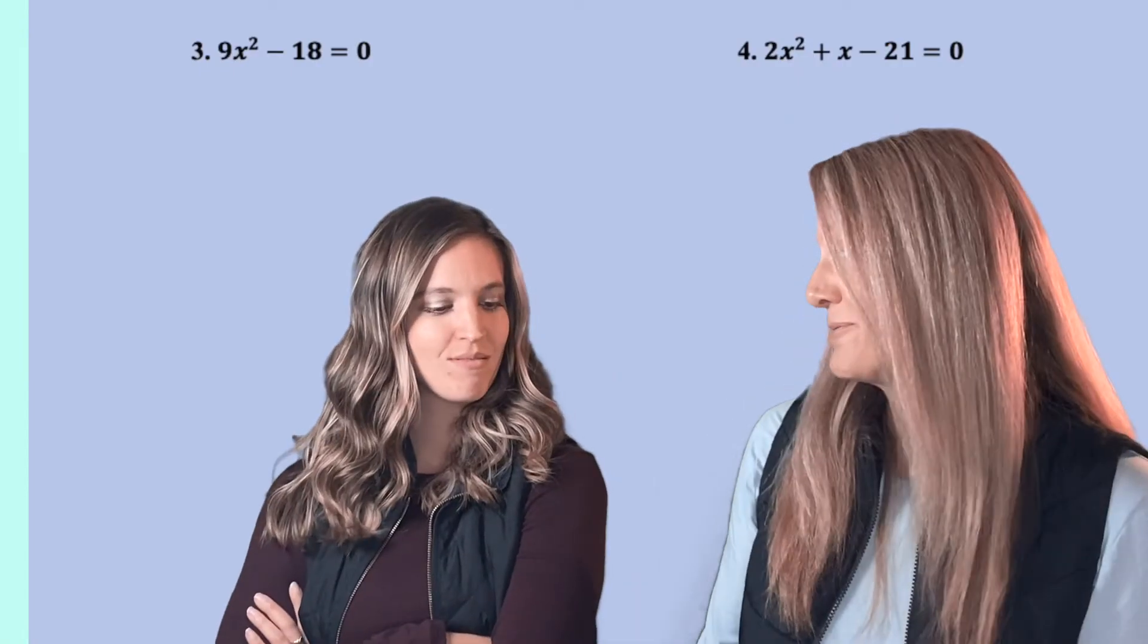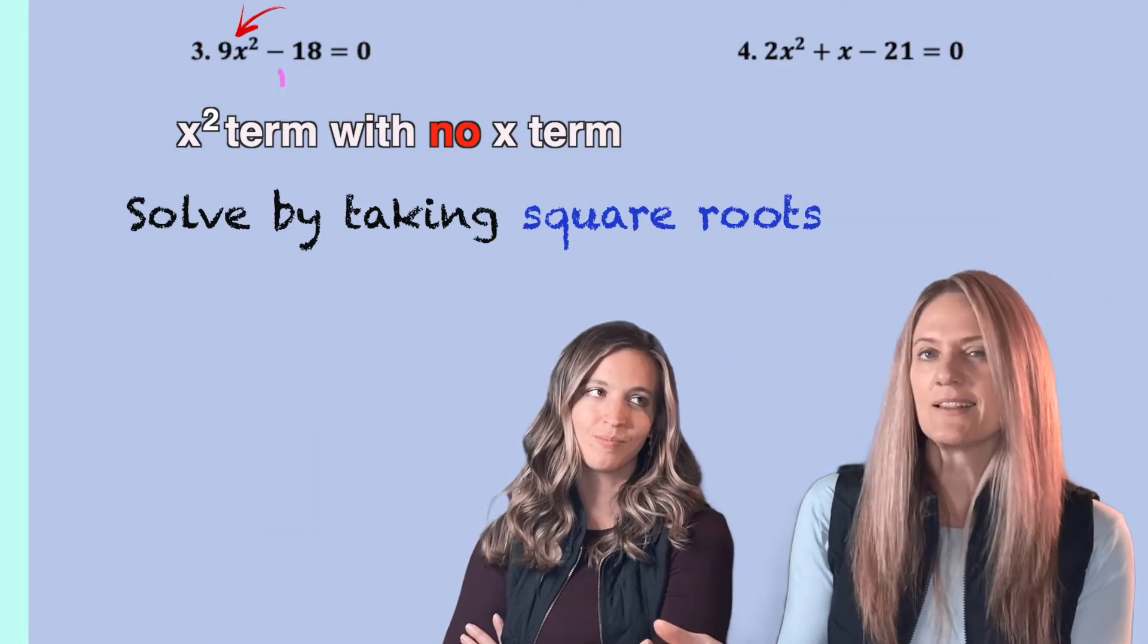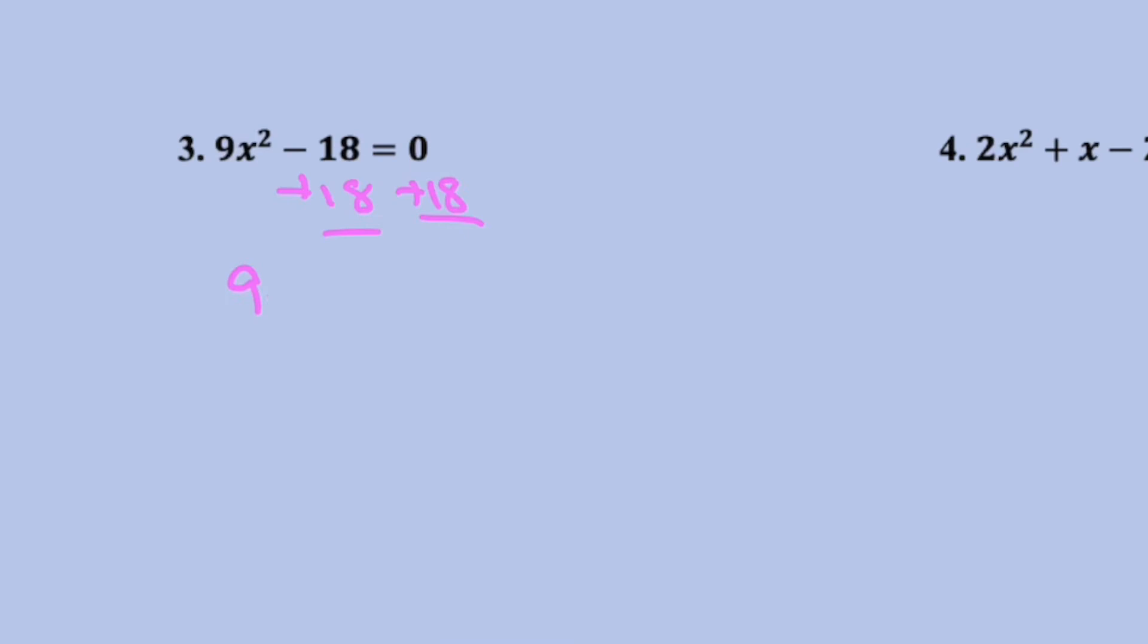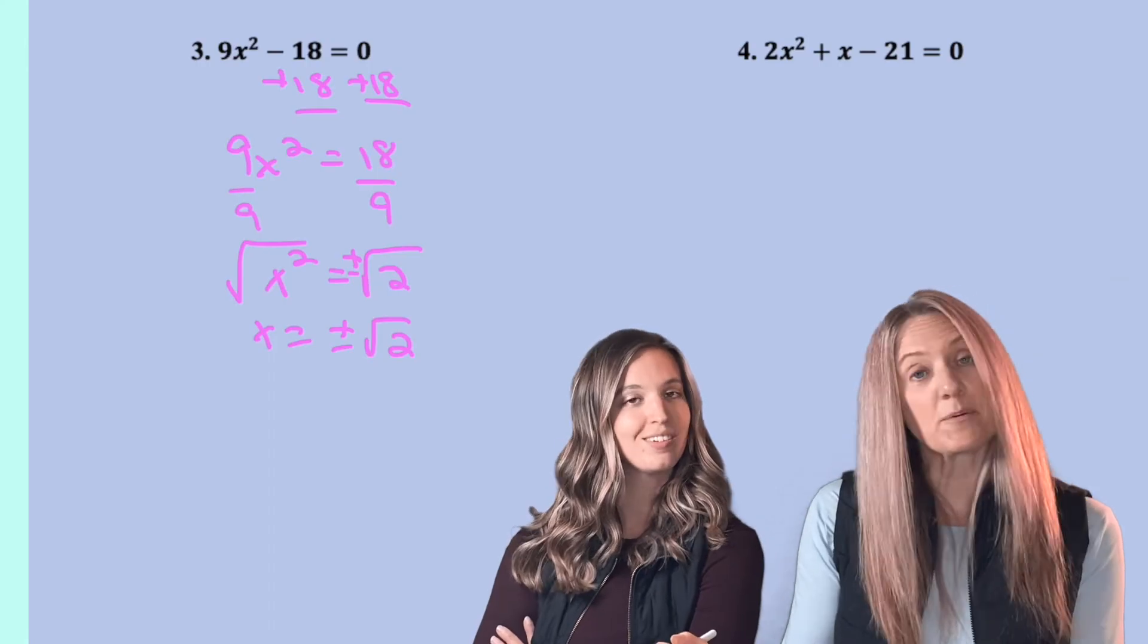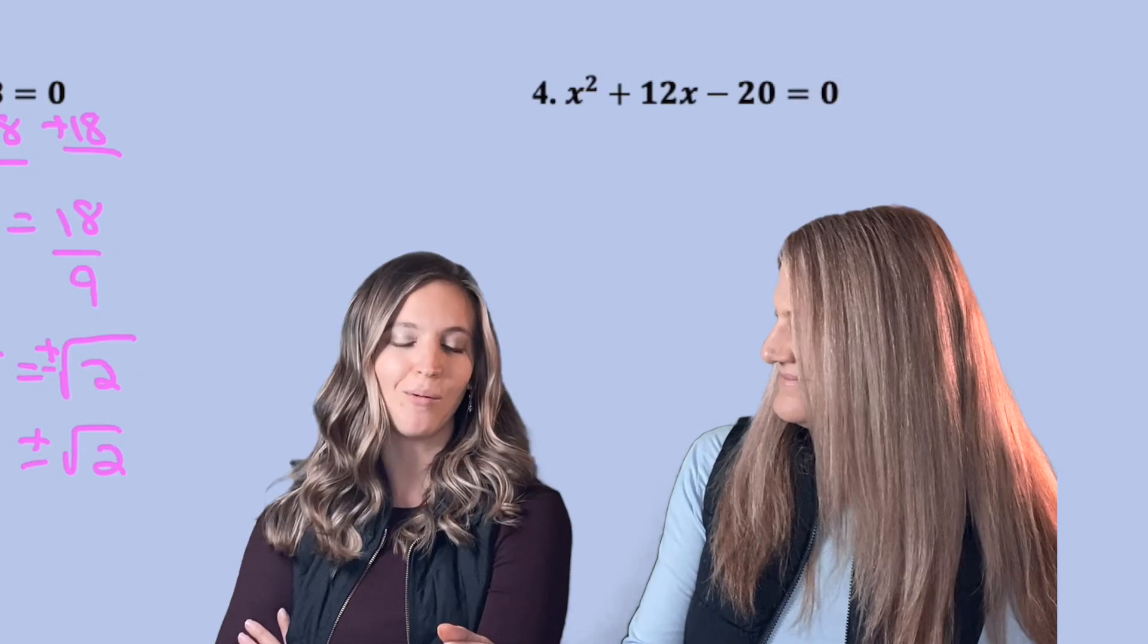Next. Oh, look at this one, Ms. Ryan. An x squared term, but no x term. Let's see who's fast now. X equals positive negative square root two. Solving by square roots. Okay, fine. You're pretty quick at that one.